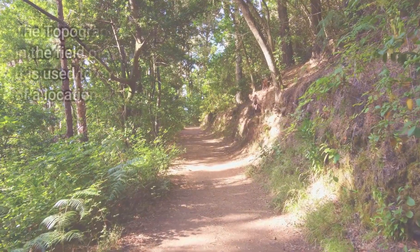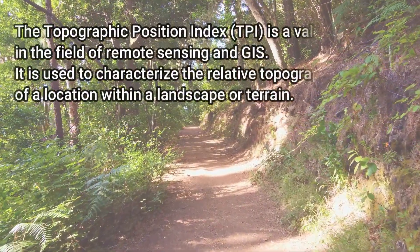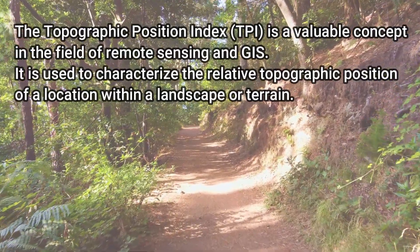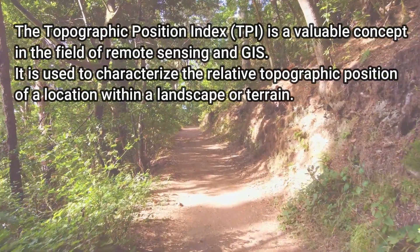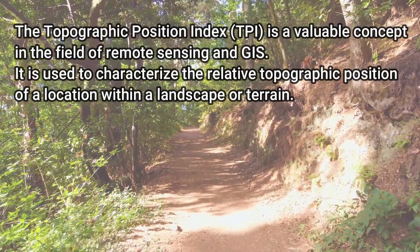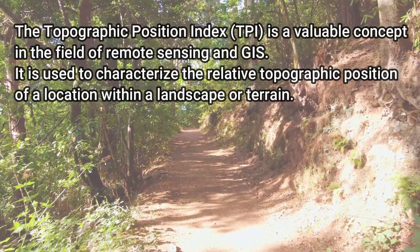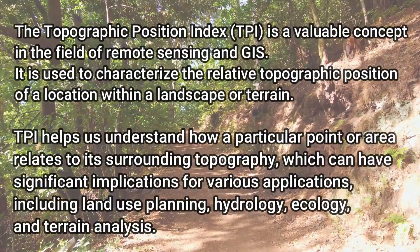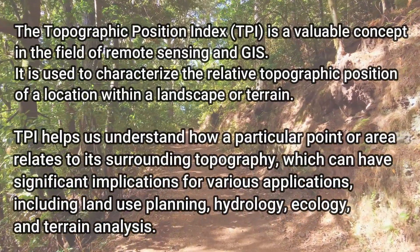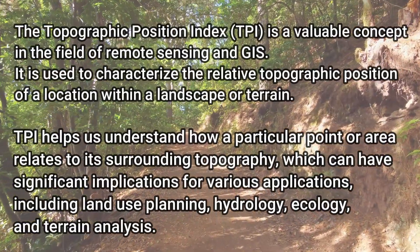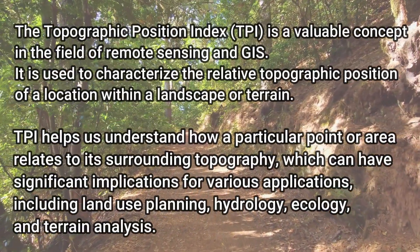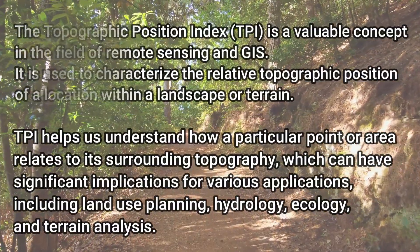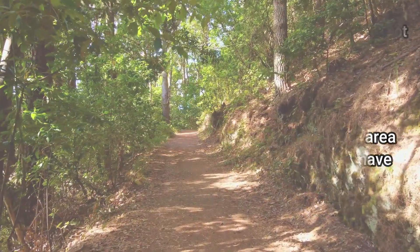The Topographic Position Index, or TPI, is a valuable concept in the field of remote sensing and GIS. It is used to characterize the relative topographic position of a location within a landscape or terrain. TPI helps us understand how a particular point or area relates to its surrounding topography, which has significant implications for land use planning, hydrology, ecology, and terrain analysis.